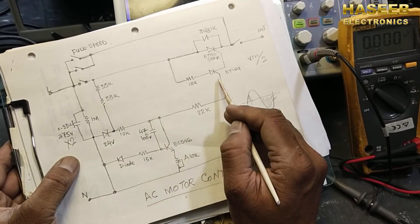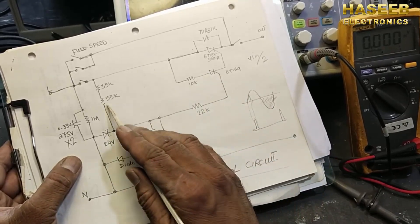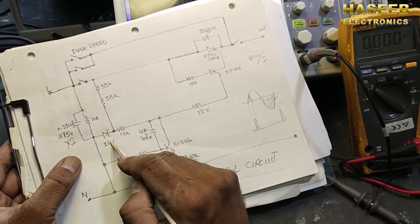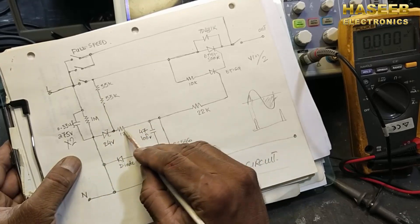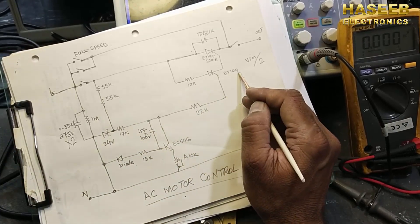So this offset will apply to this trigger. And how much peak out of this 24 volts, how much peak we are taking to trigger this BT169?